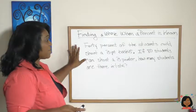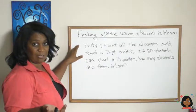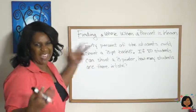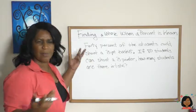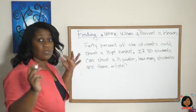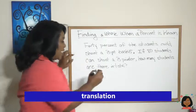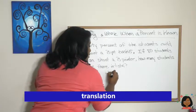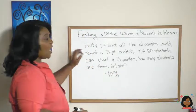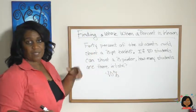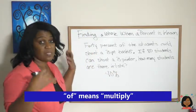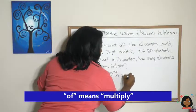What I'm trying to say in this problem is that 40% of the students who can shoot that three-pointer is equal to 80 actual students. How many are there in total? We have to do a little bit of translation here.